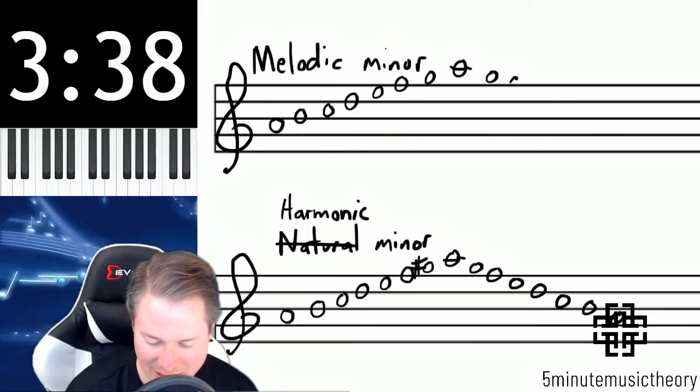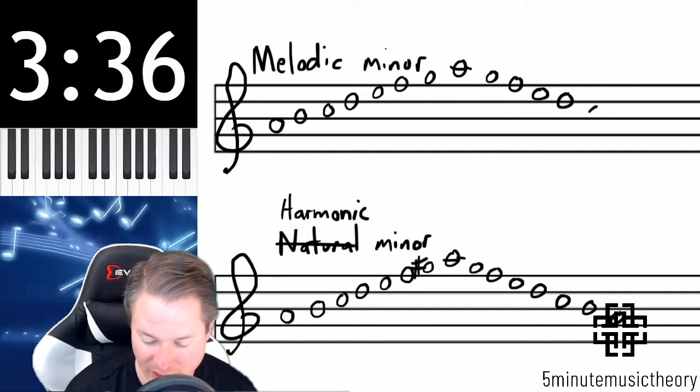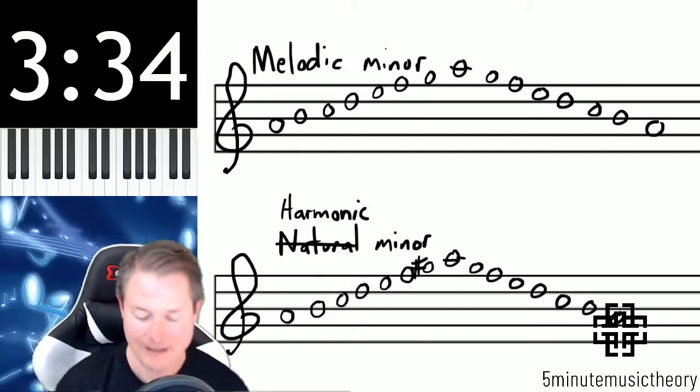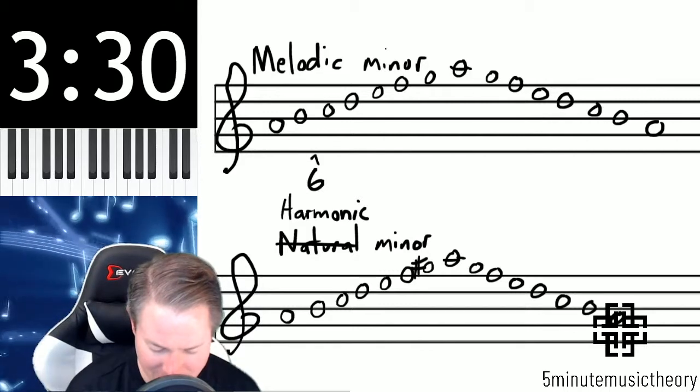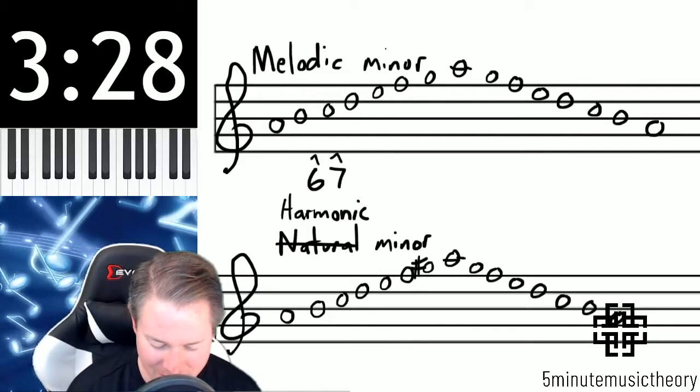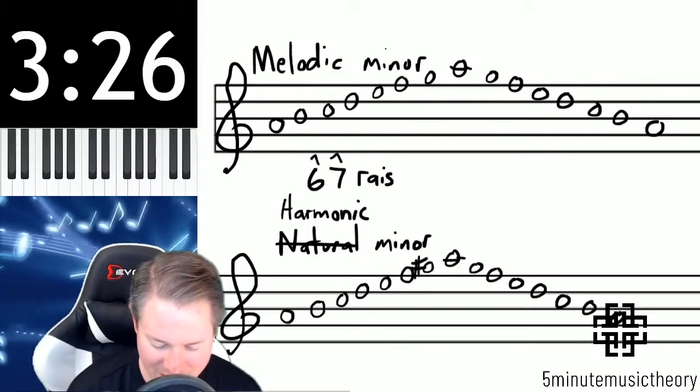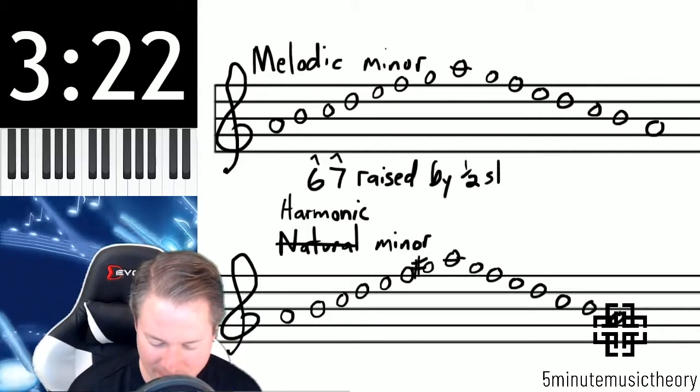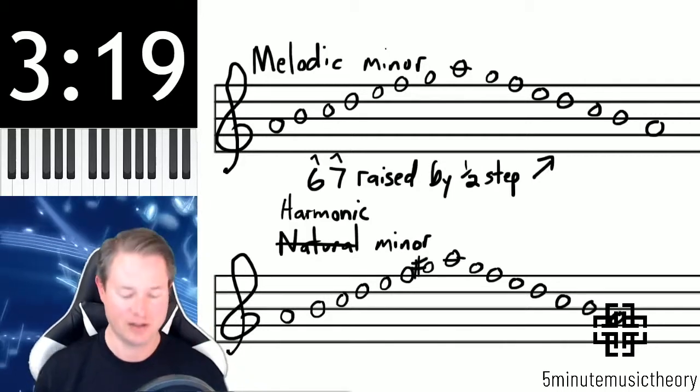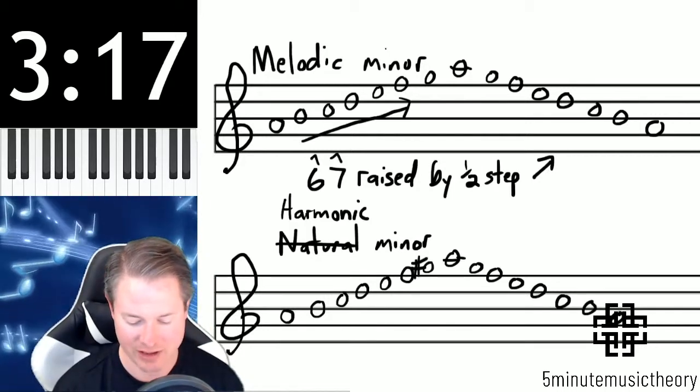What we need to do is find the sixth and seventh scale degrees and we need to raise them, raised by half step when ascending. So the ascending portion of the scale is the part that's going up, descending is going down.